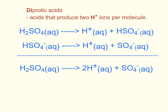What does this mean in terms of concentration? If we have a solution of sulfuric acid with molarity 2.0, then when we are considering the molarity of hydrogen ions in the solution, we should double this concentration. It would be 4.0.